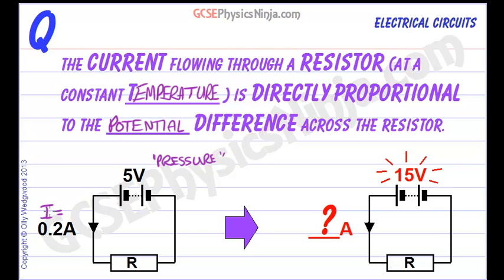I is the symbol for current. The reason that we've got at a constant temperature is that if you increase the temperature, then the atoms of the resistor jiggle about, they vibrate more, and that gets in the way of the electron flow.